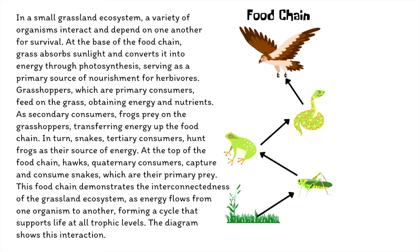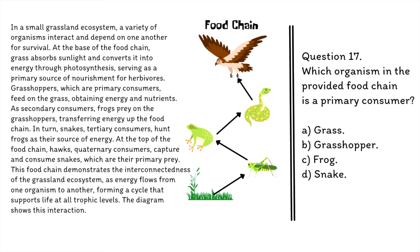Question 17: Which organism in the provided food chain is a primary consumer? A. Grass, B. Grasshopper, C. Frog, D. Snake. The correct answer is B, Grasshopper. Please do not confuse the primary consumer with the producer. The primary consumer is an organism that feeds directly on producers — in this case the grass. Producers convert sunlight into energy through the process of photosynthesis, and primary consumers consume these producers to obtain energy and nutrients.